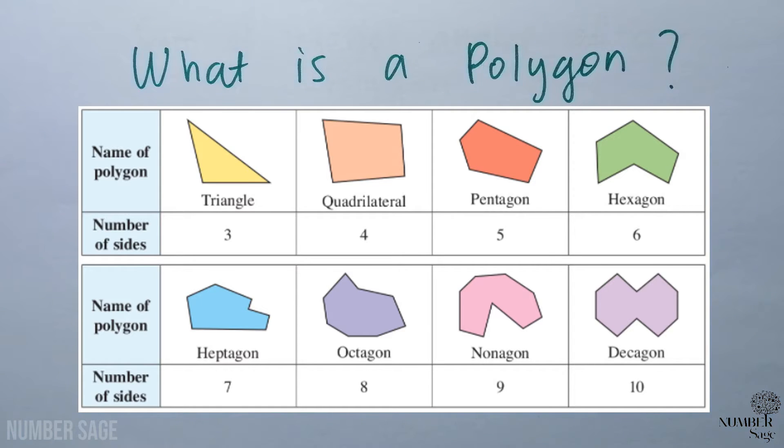Before we get into the details, let's see what is a polygon. A polygon is an enclosed figure on a plane bounded by three or more straight lines. For example, in this diagram we have a triangle. The number of sides for a triangle is three.